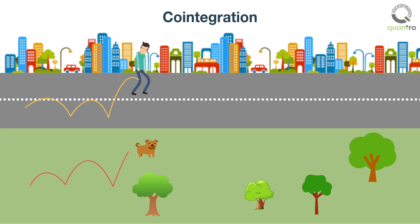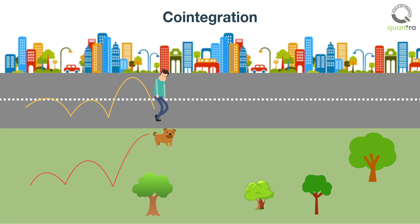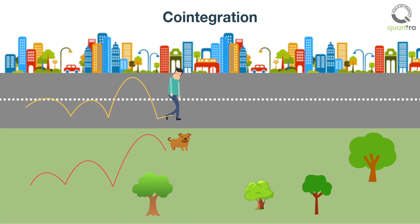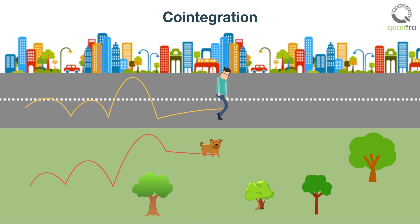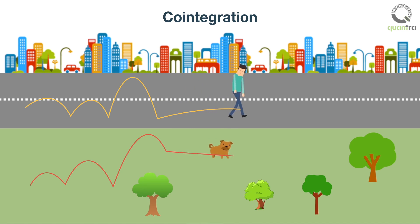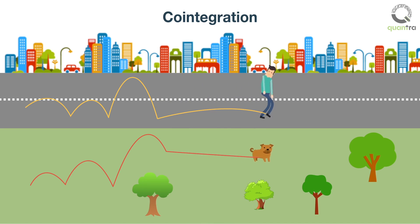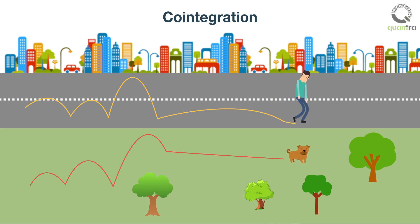However, assume that the dog and the drunk man stay connected to each other using their hearing and smelling senses. Then the distance between them is bounded and doesn't increase indefinitely. Loosely speaking, we can say that the distance between the two paths is stationary and hence, the paths of the drunk and his dog can be considered as co-integrated.